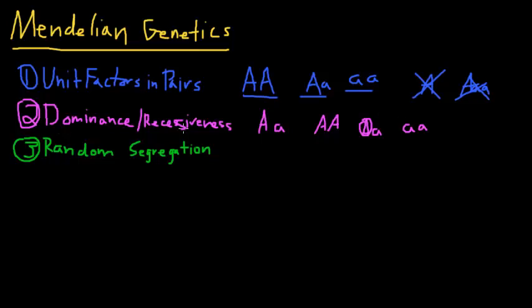So that's the concept of dominance and recessiveness—if we have a dominant and a recessive allele, the dominant one would overshadow the recessive.